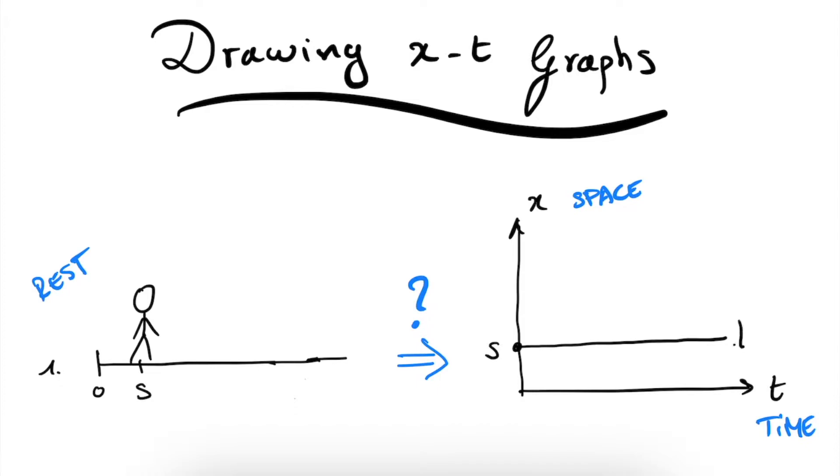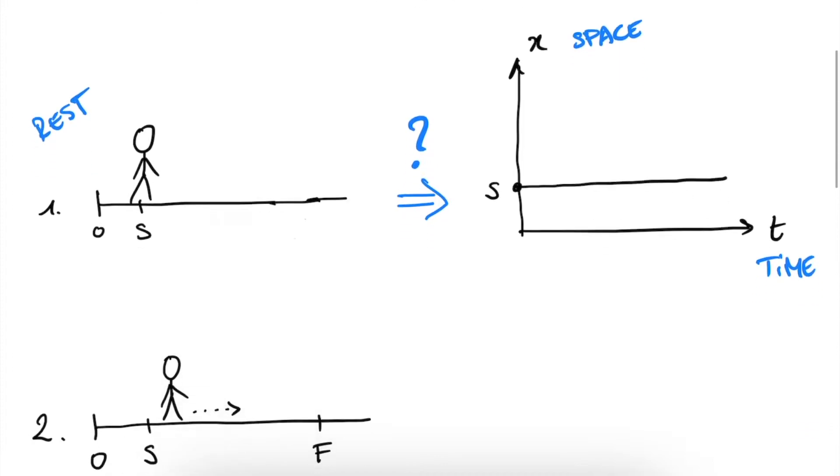So what this means is that if we are starting at position X, if time goes on, X doesn't move. So this graph doesn't move in the vertical direction because X or position doesn't move. This is the simplest case of an XT graph, basically just a straight line which indicates that we didn't move at all. How does this change?